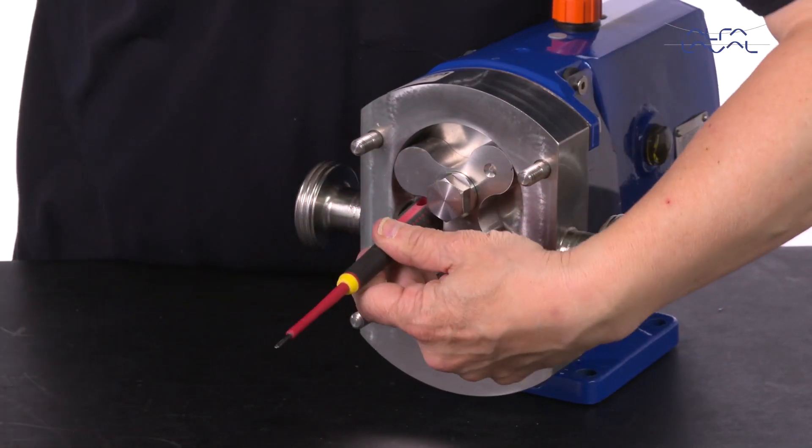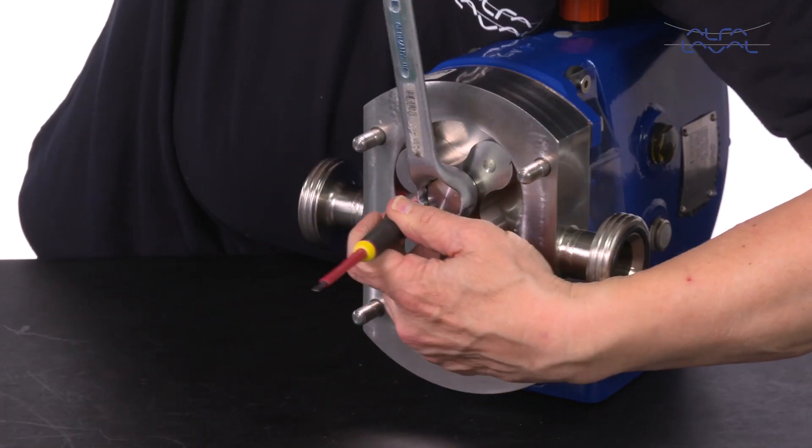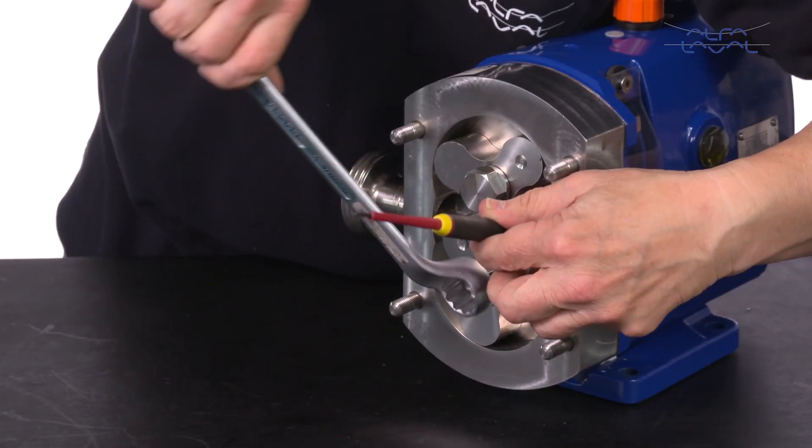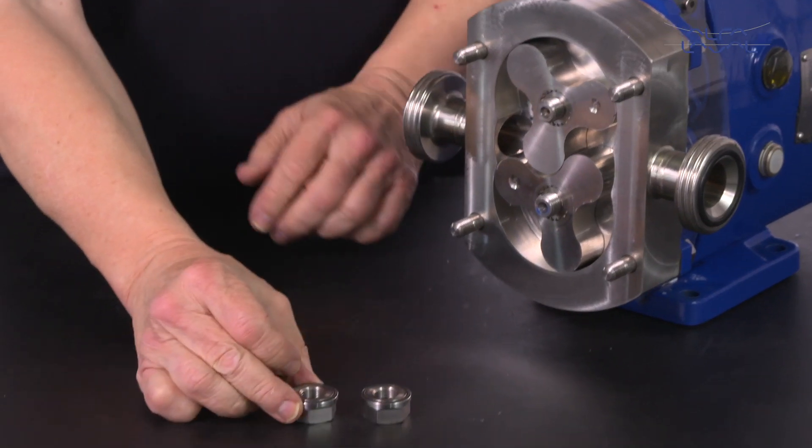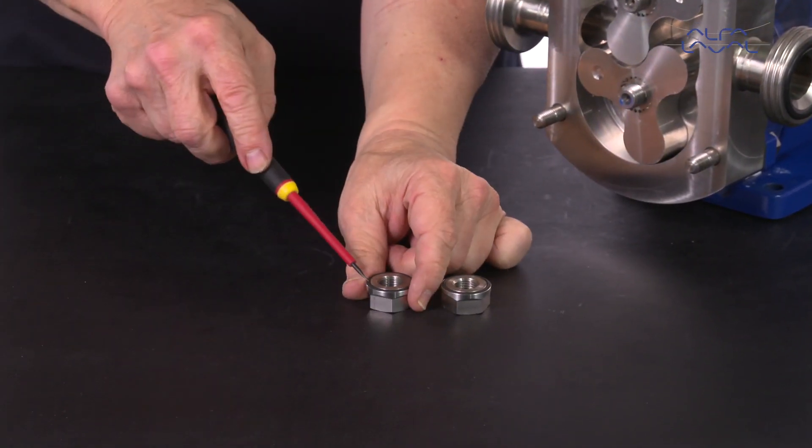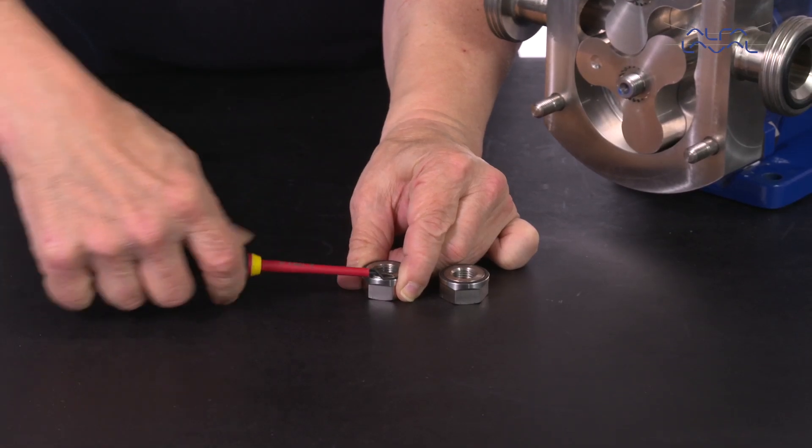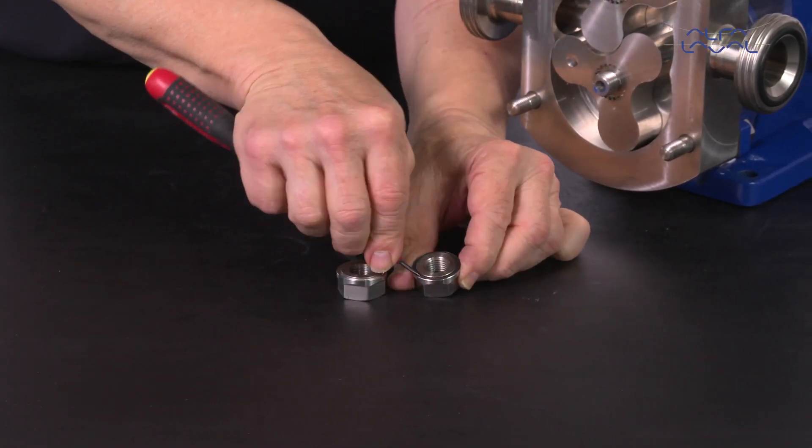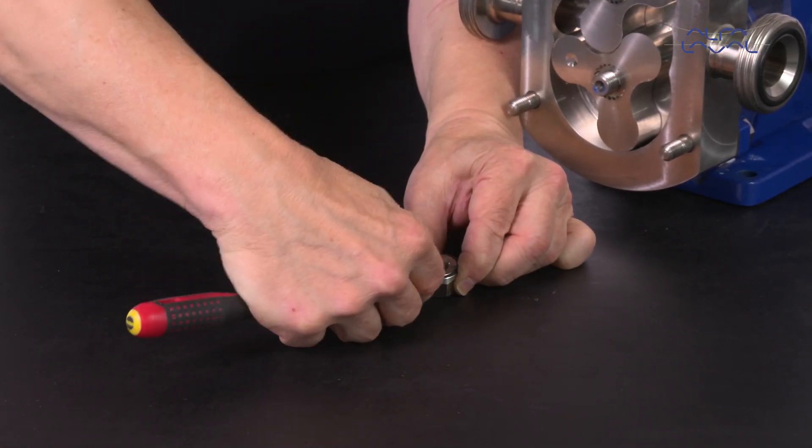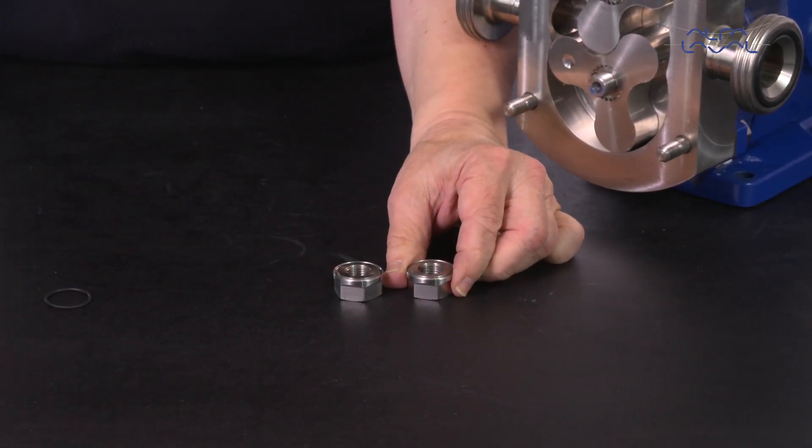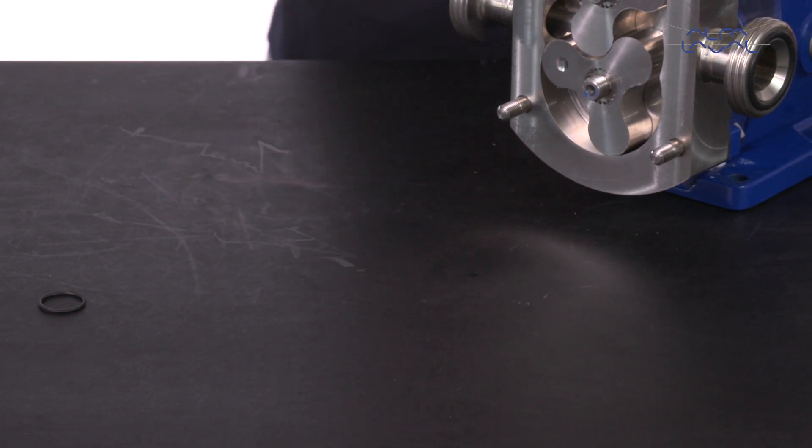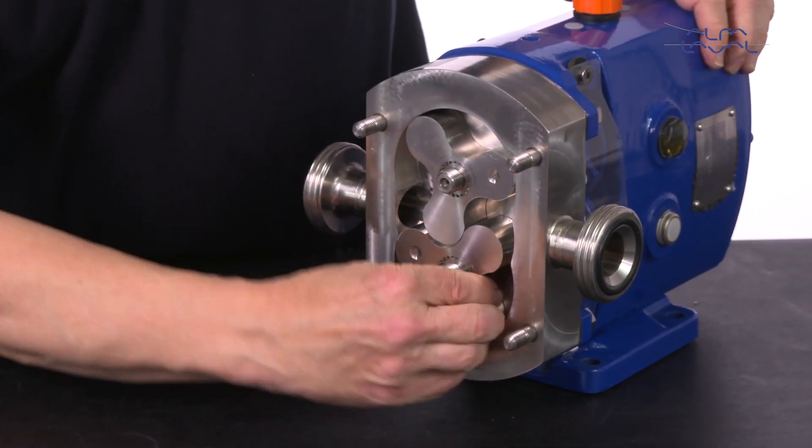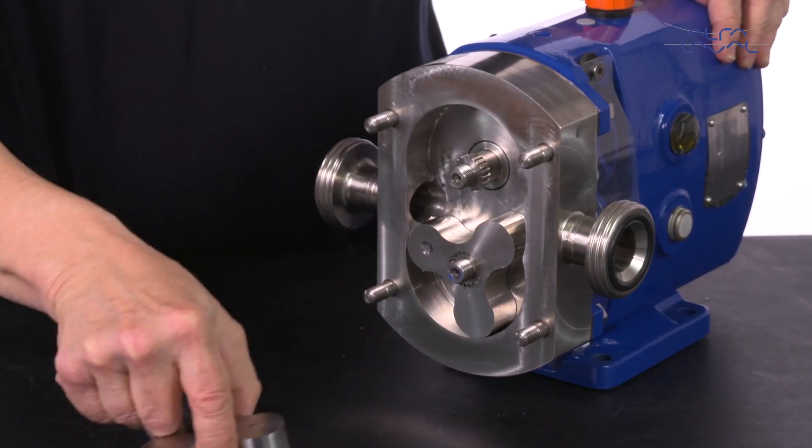Insert a soft tool between the two rotors to stop them from turning. Unscrew the rotor retention nuts and remove the O-rings. Then, extract the rotors and remove the O-rings.